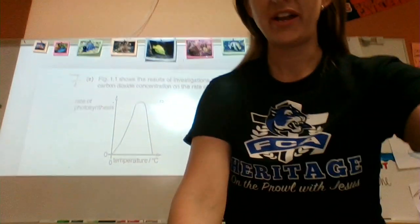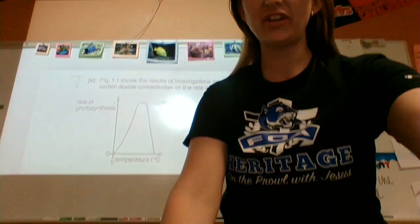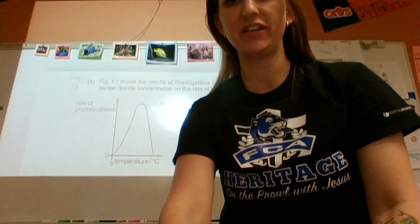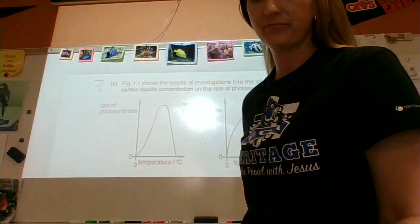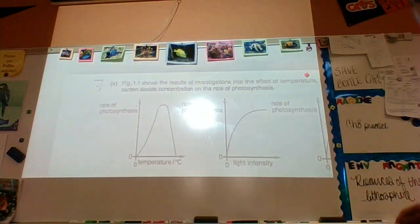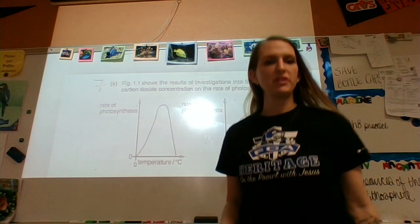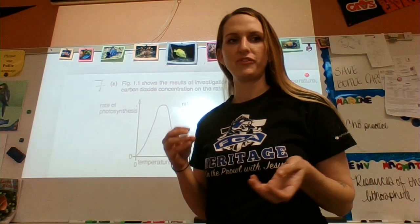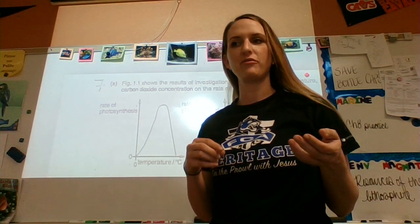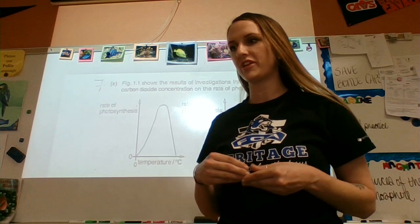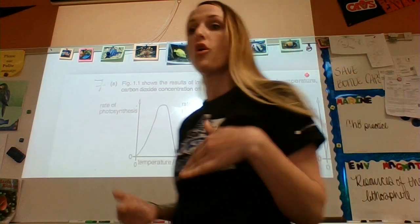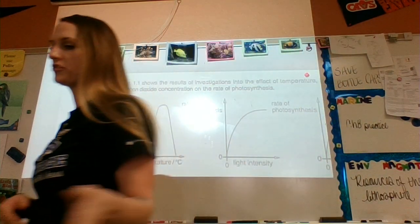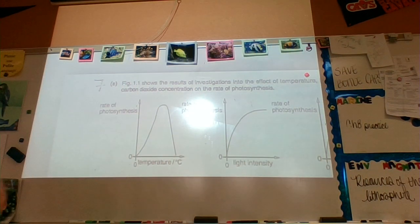This is number 17, 18, and 19 in your study guide. These are going to be limiting factors in photosynthesis — things that if you don't have enough of, will slow down the rate of photosynthesis or stop it. Or if you have too much of something, like temperature, it could stop it or hinder it.